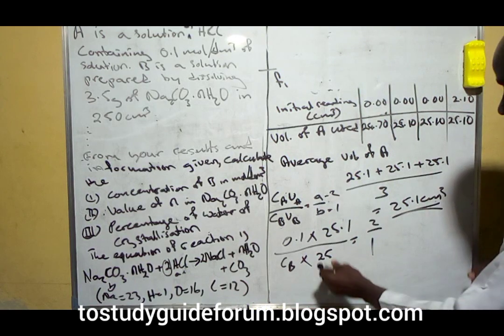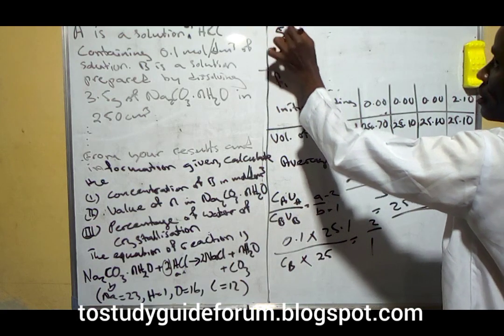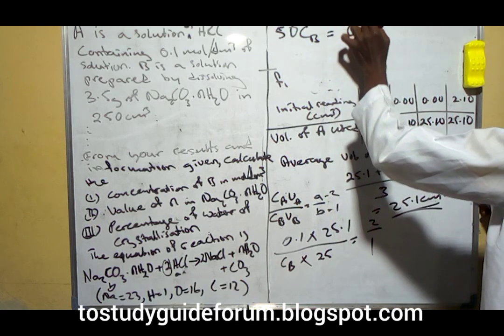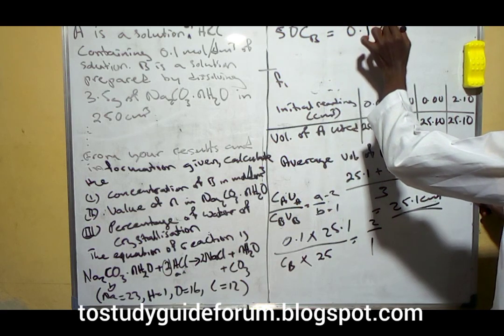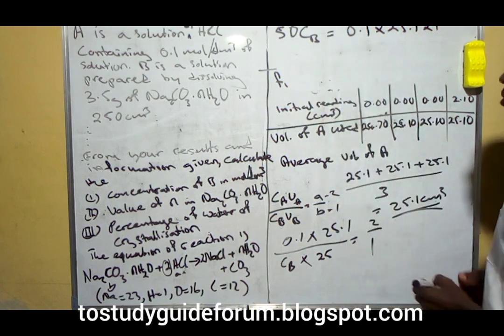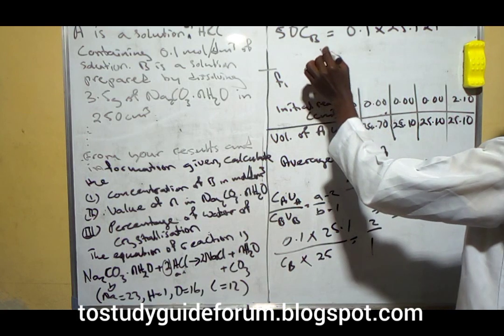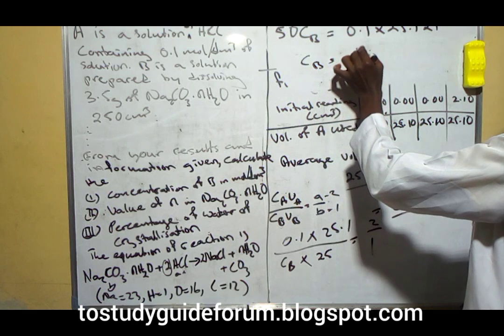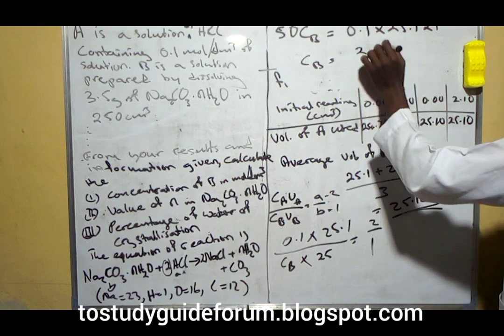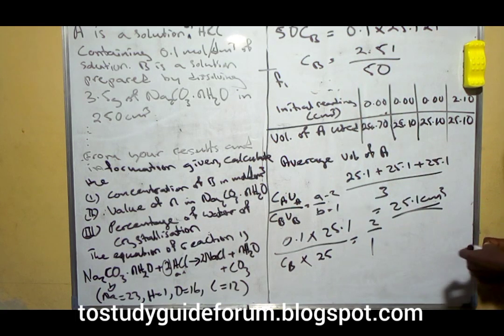If we're going by that, we have 2 times 25, which equals 50 times CB, equals 0.1 times 25.1. That gives us 2.51 over 50.